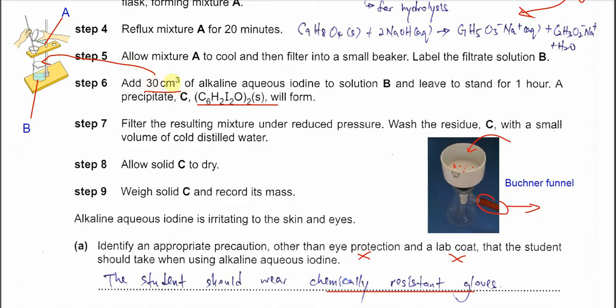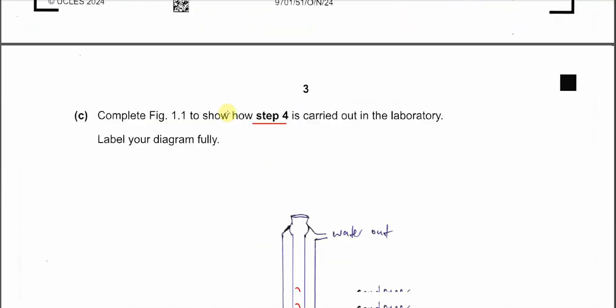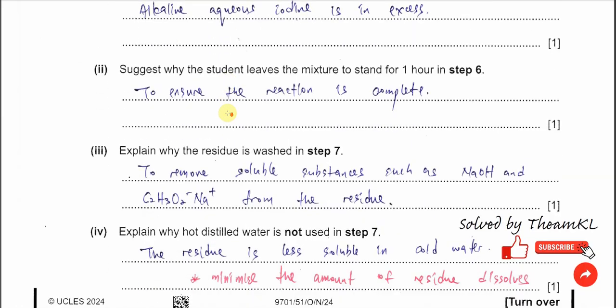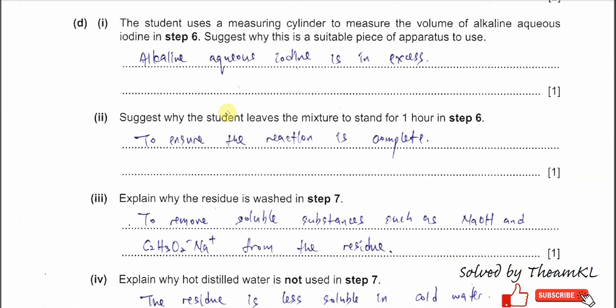Of course, second is because it's 30 cm³, so it's in excess compared to solution B. Part 2, suggest why the student lets the mixture stand for one hour in step 6. This is very easy. For one hour, it's just to make sure the whole reaction completes, means the solid C fully forms from this reaction.